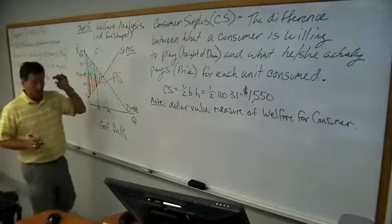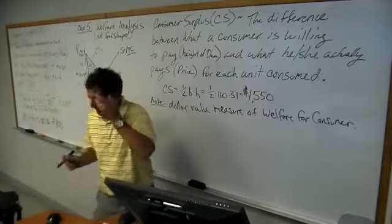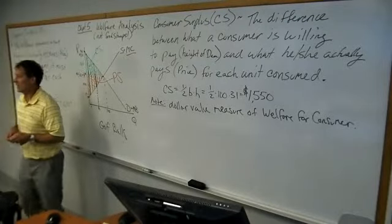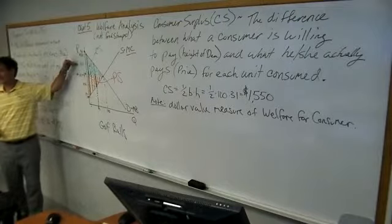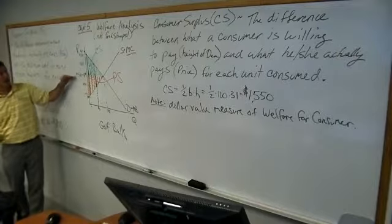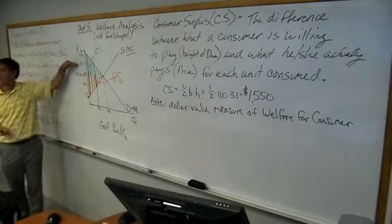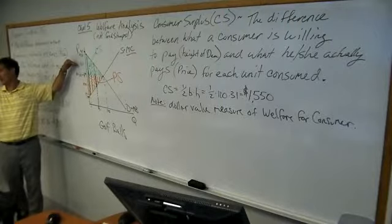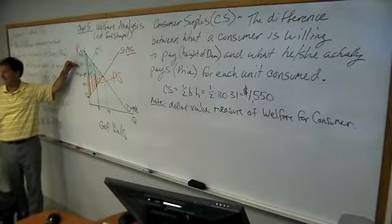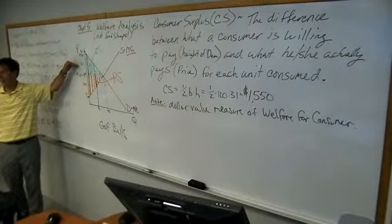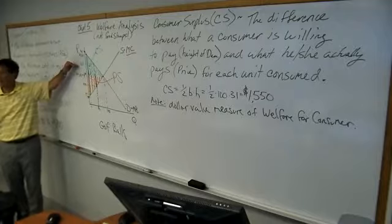Remember when we talked about disequilibrium? We said, what happened if the price was 65 back in Chapter 3? If the price was not 50 and it was 65, what happened in the market? What did we observe? It was one of those things with an S — a shortage or a surplus?